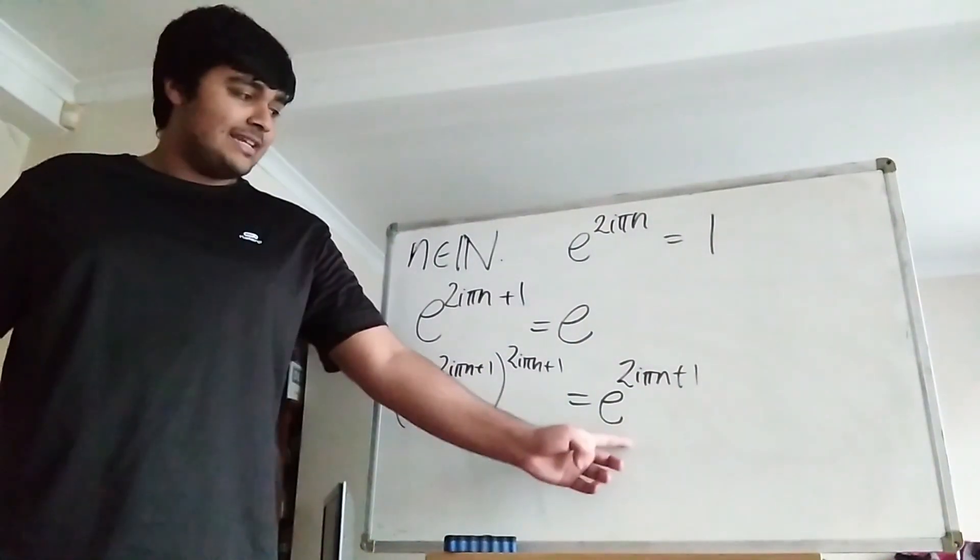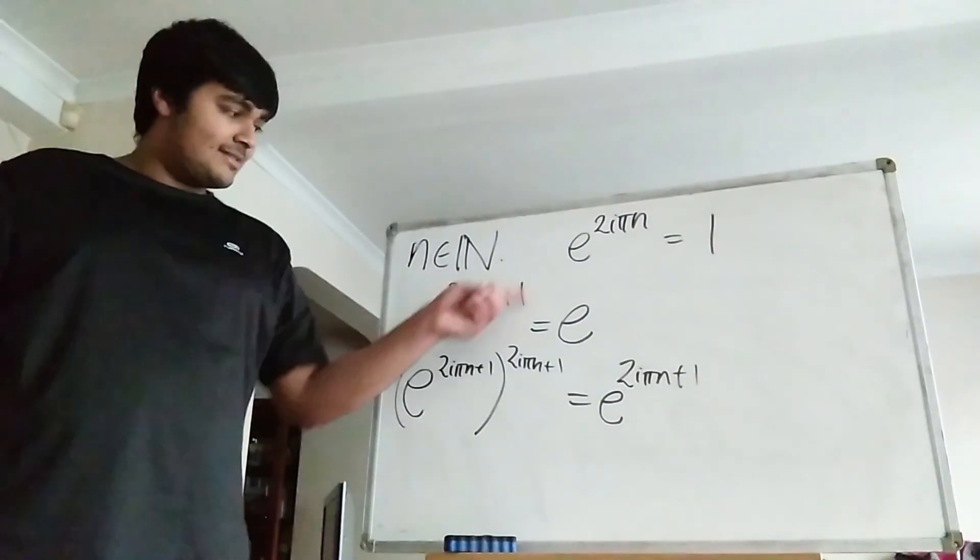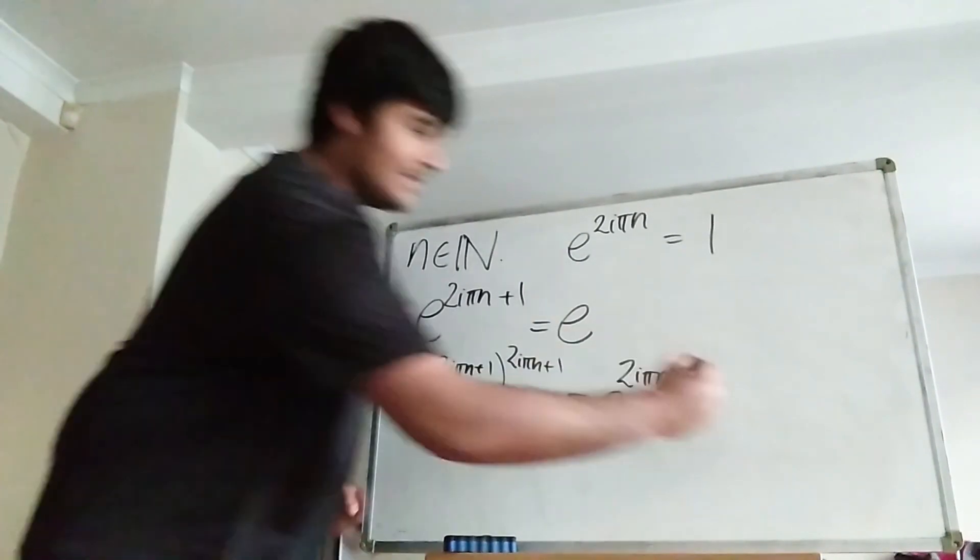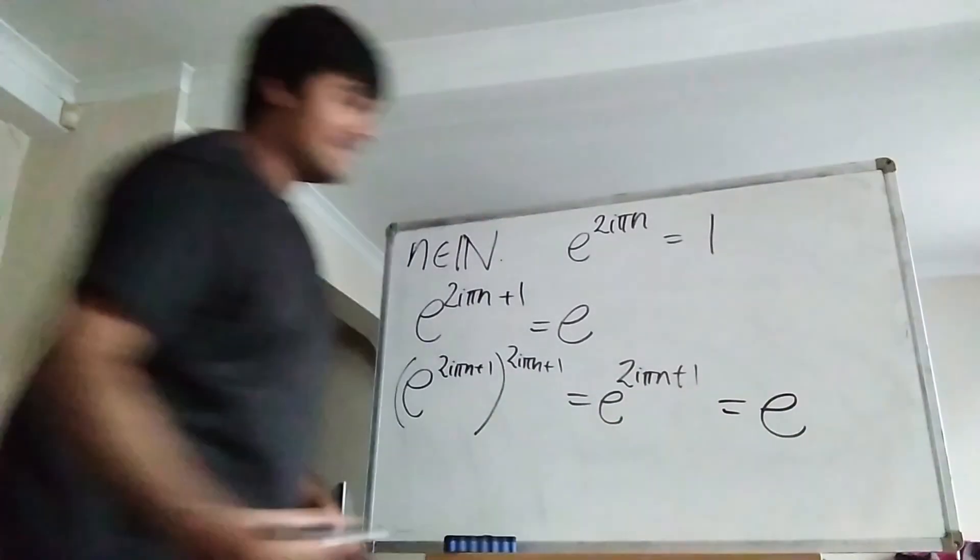But by the previous line, e to the 2i pi n plus 1 is just this thing here, which equals e. So we get this thing equals e.